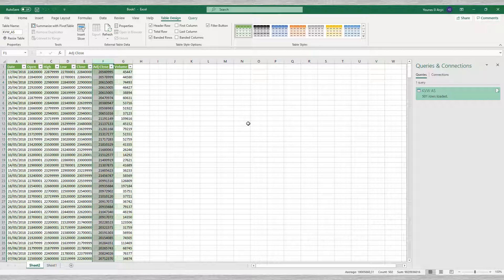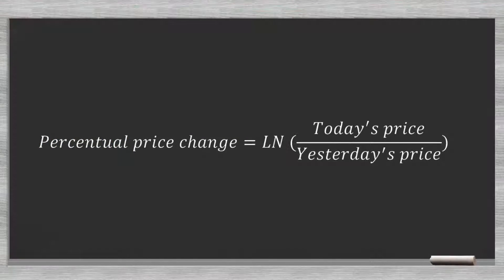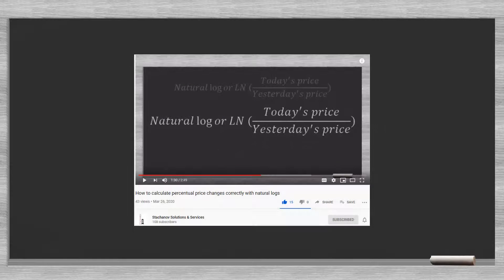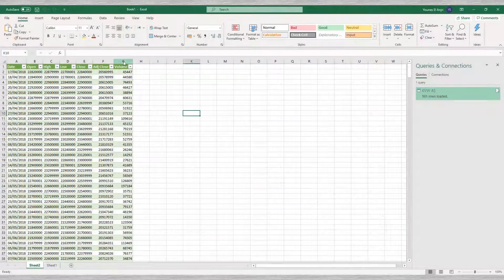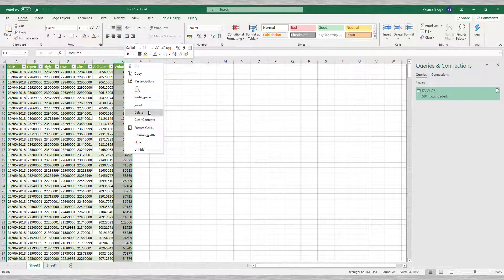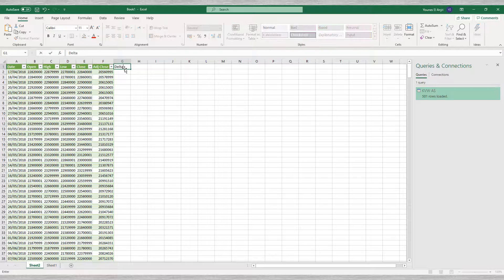The next step is to calculate the daily price change, or delta. We do this using the natural log — the Excel function LN. The natural log of today's price divided by yesterday's price is the result we want. We create a separate column with the daily percentual price changes.